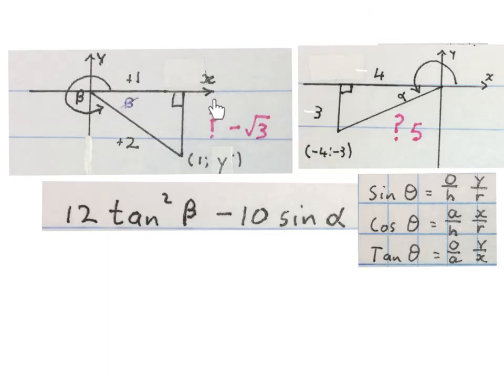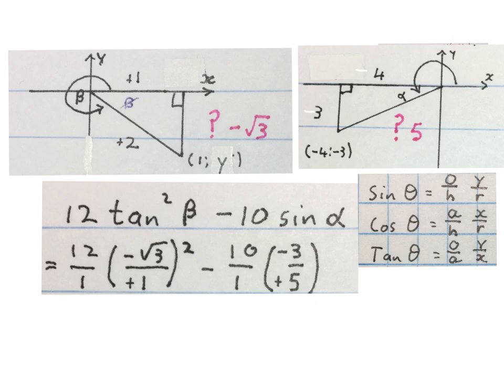Now we use these two diagrams and our ratios to determine this answer. Tan of beta we'll read from this diagram. Tan is y over x. If I stand here, y is minus square root of 3 and x is 1. Remember to put it in brackets with a square, minus 10 over 1. Sin of alpha we'll read out of this diagram. Sin is y over r. If this is my angle, y is minus 3 and r is 5, that we write in a bracket here.